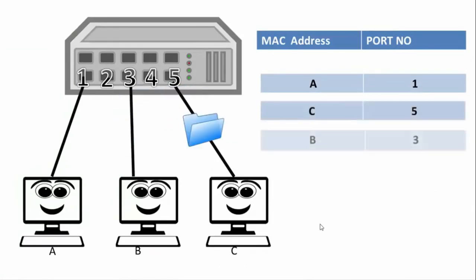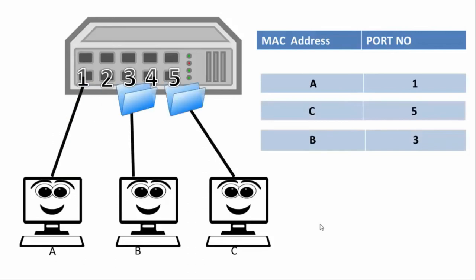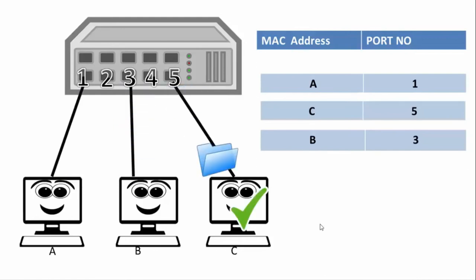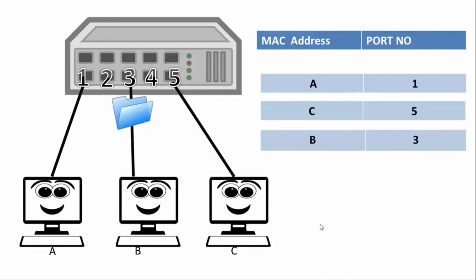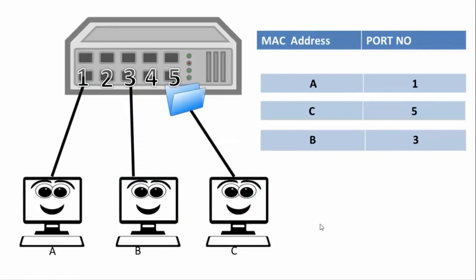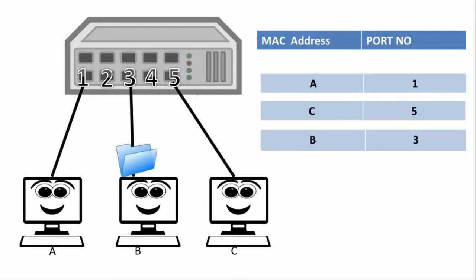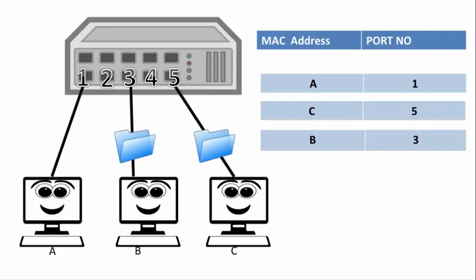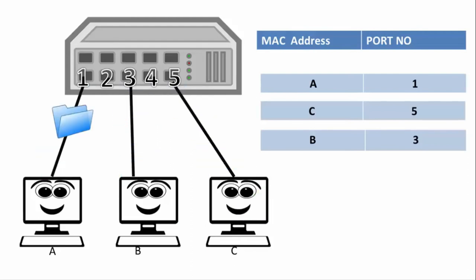As you can see in this picture, as soon as a file is received by the switch, it registers that computer A with MAC address A is connected on its port one. Similarly, when computer C replies back, it comes to know that C is connected on its port as well. In reality, as soon as devices are connected, address resolution protocols handle all of this and the CAM table is updated and refreshed in milliseconds.